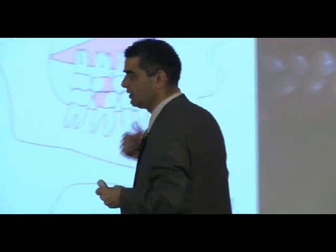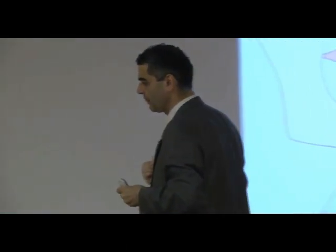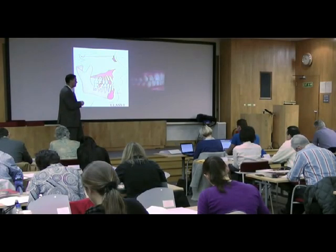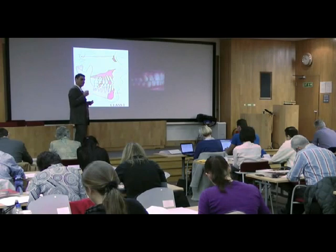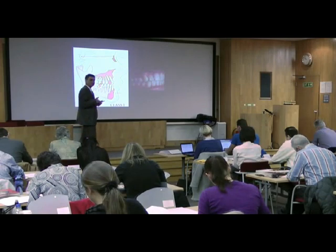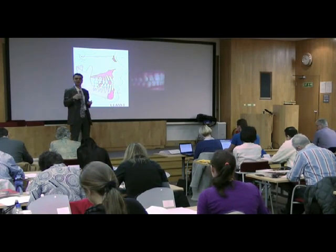So what is Skeletal 1 in my book — and hint, this is one of your exam questions. Skeletal 1 is where the maxilla is in the correct relationship to the anterior cranial base, and then the mandible is in the correct spatial relationship to the maxilla. That's a correct Skeletal 1. Skeletal 1s tend to have better-looking faces, without a doubt, and tend to have less crowding, without a doubt.